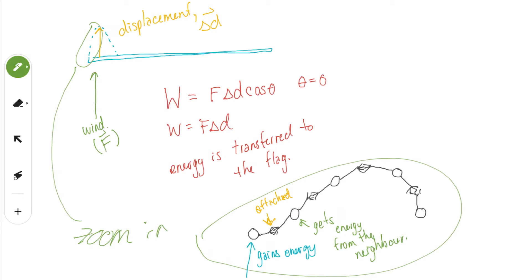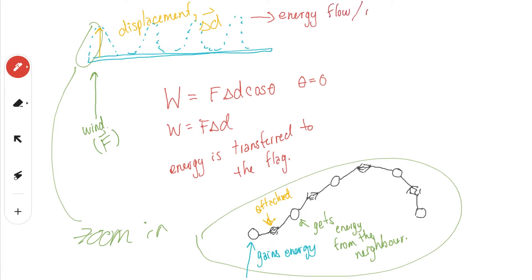So essentially, that's what a wave is: one particle gets the energy, it passes it on to the next one, then to the one beside it, and so on, until it travels the whole length of the flag. The direction of energy flow is to the right. But in what direction are the particles moving? Up and down. That's the key point — the wave does not carry any of the particles with it. The particle from the left does not travel to the far right.